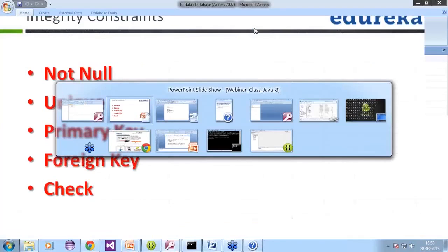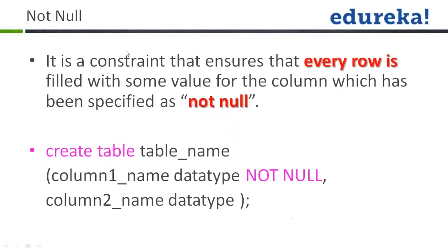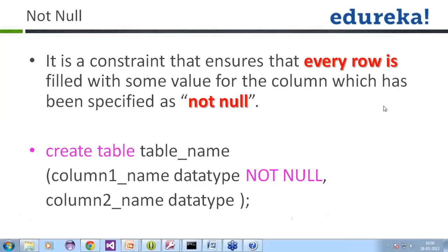Let's discuss them one by one. First, not null: it is a constraint that ensures that every row is filled with some value for the column which has been specified as not null. When you create a table, you just have to mention the data type and after that mention not null. That means this column cannot be null — you have to provide values whenever you use it.